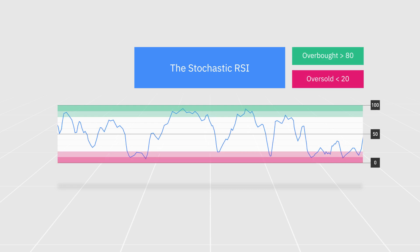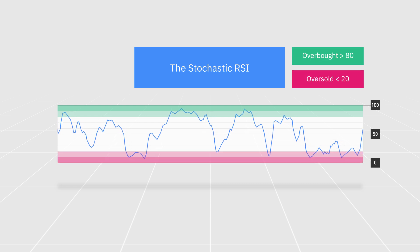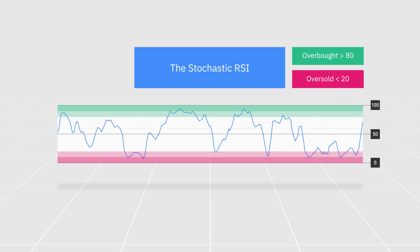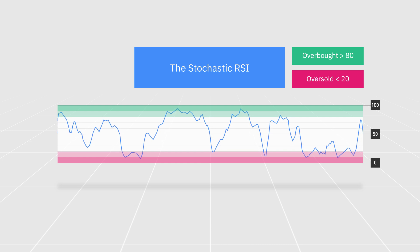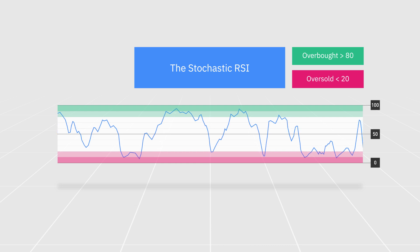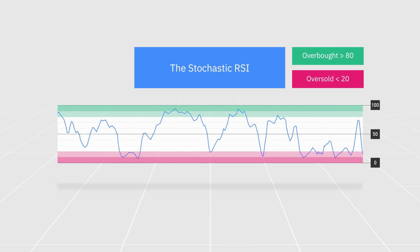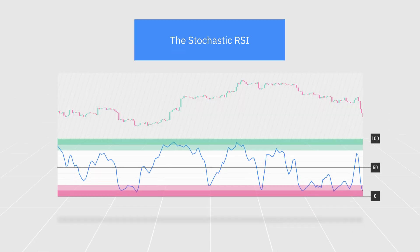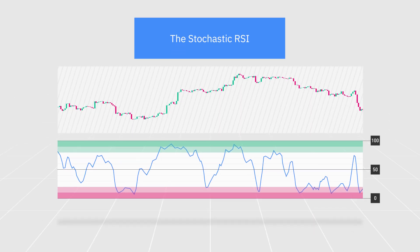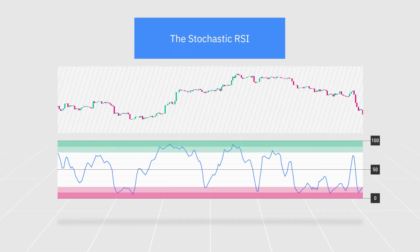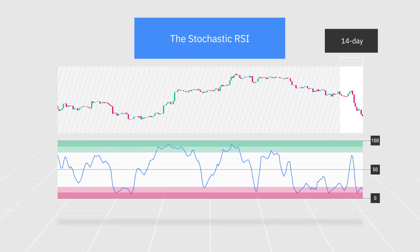Charts with a 0 to 100 setting may look slightly different, but both variants are interpreted in essentially the same way. The most common time setting for Stochastic RSI charts is a 14 period.